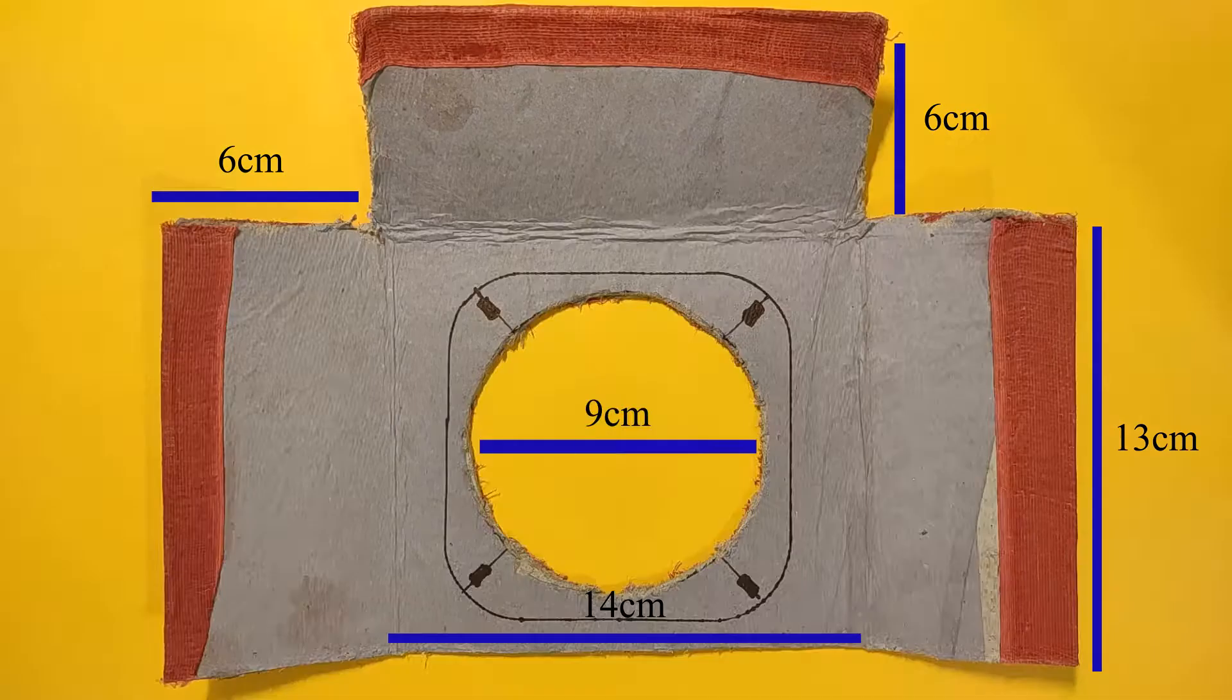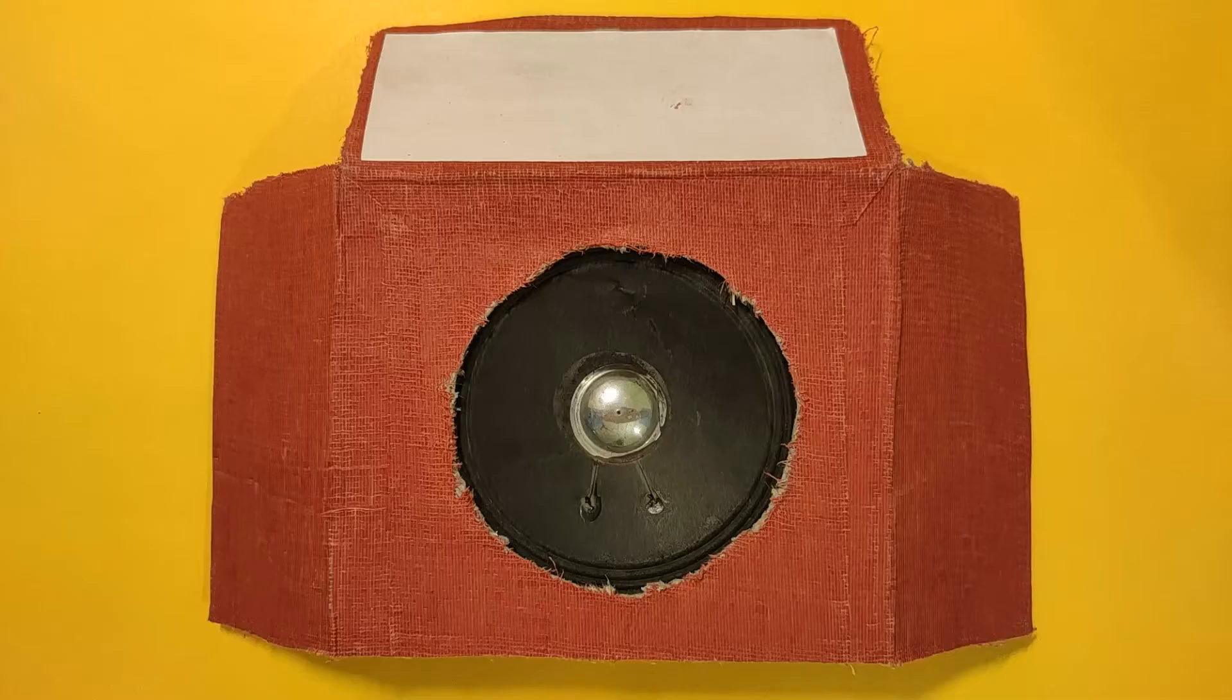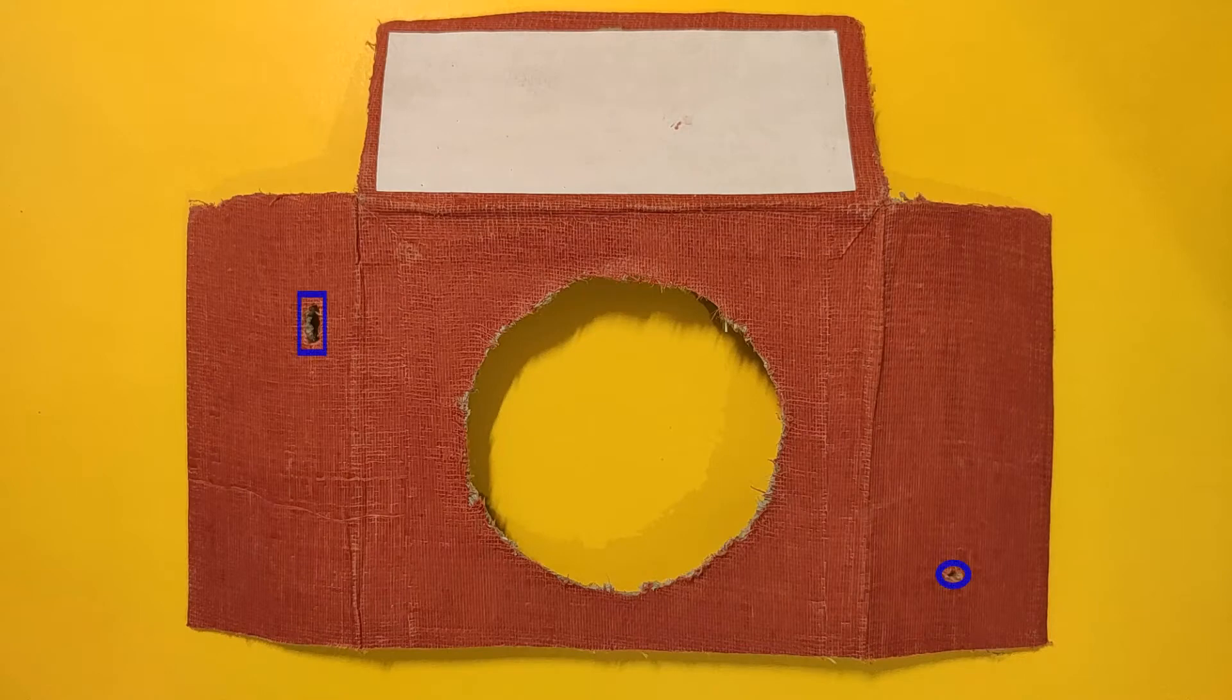Now we will make the case for this circuit. For that, take the cardboard and cut it out in the shape of a speaker. Also cut a couple of holes on the side for a switch and aux cable. Make a grill by cutting the cardboard in the shape as shown.